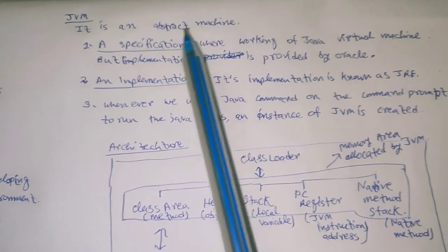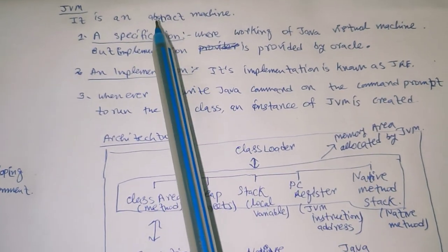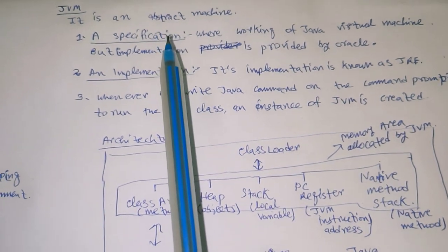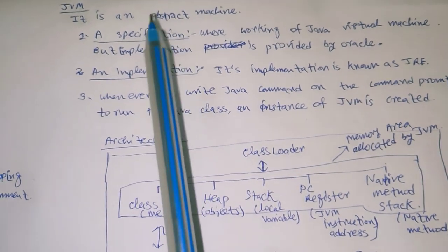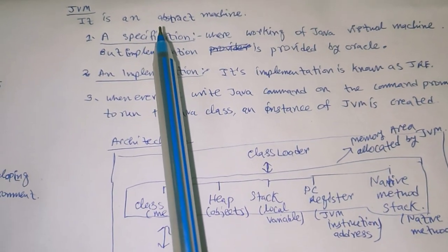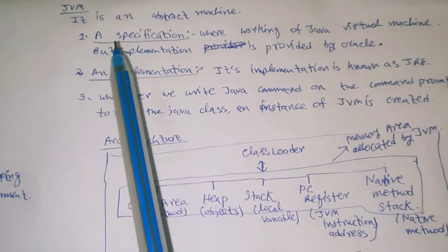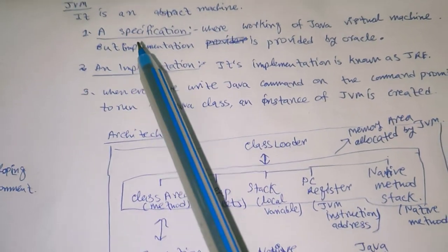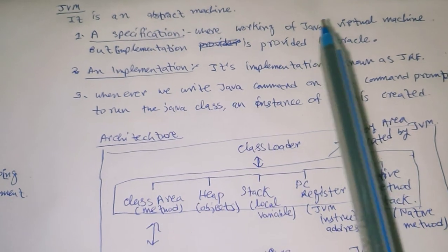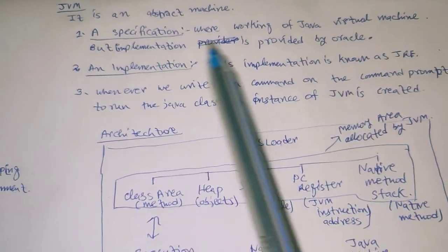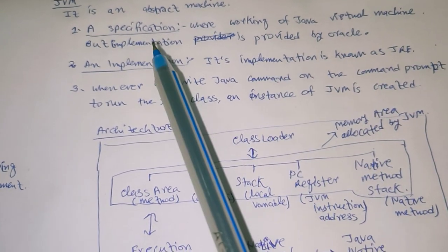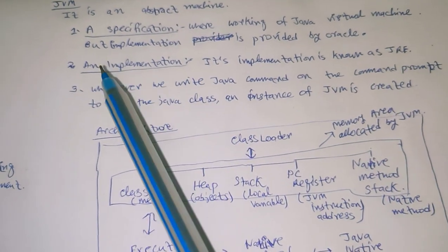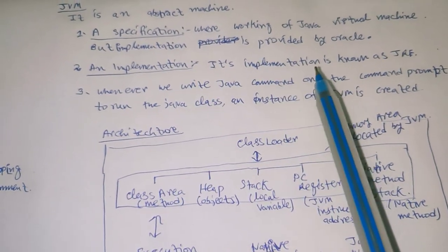We are discussing the JVM. What is JVM? JVM is Java Virtual Machine. It is an abstract machine, not a physical entity. Here are three points that JVM works as: first, a specification, and the implementation of the JVM is provided by Oracle and other companies.